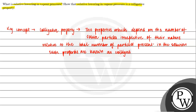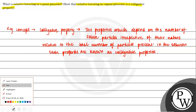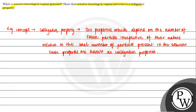So basically, Colligative Properties are those properties which depend on the number of solute particles. The number of solute particles relates to the number of moles. So let's solve this question.